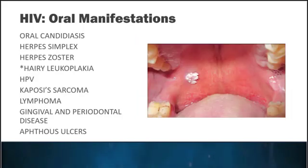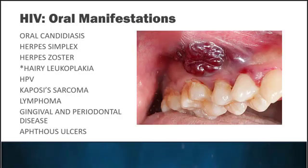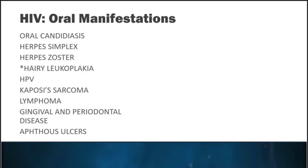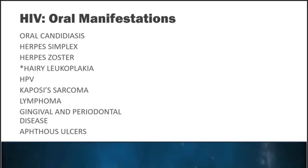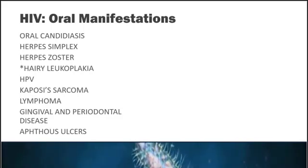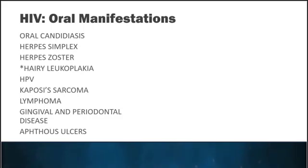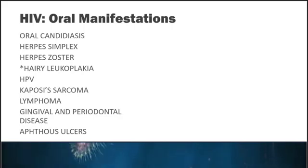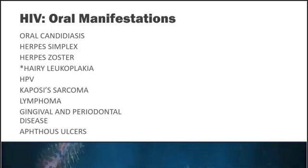We can also see an increased risk of HPV, Kaposi sarcoma, lymphoma, gingival and periodontal disease, and even aphthous ulcers. When a patient's immune system is compromised by a devastating disease such as HIV, they're vulnerable to every opportunistic infection. However, many advances have been made — the goal with HIV is to maintain the CD4 T-helper cell count, and medications can even bring that count to a normal range for an extended period of time, so it's not nearly as scary as it was even 10 to 15 years ago.